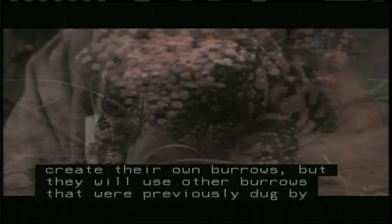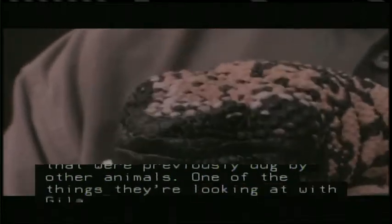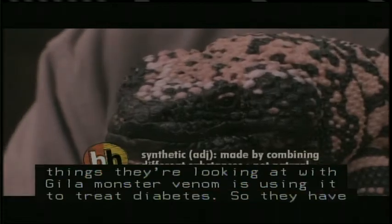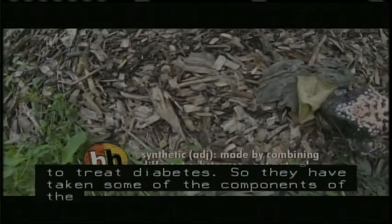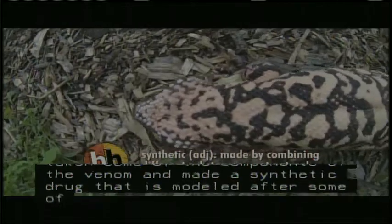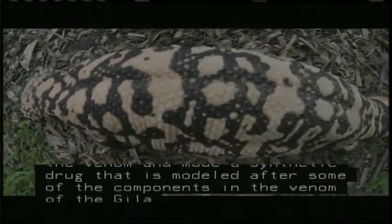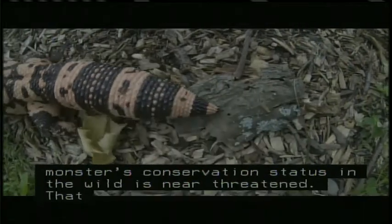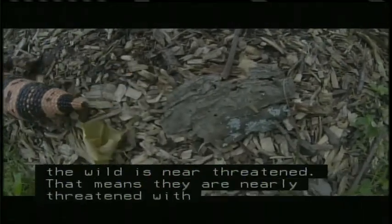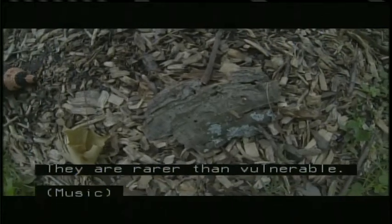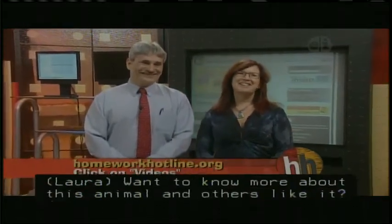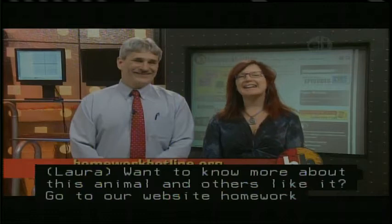Gila monsters usually grow to be about a kilogram or two pounds and 22 inches long. They will burrow to stay out of the heat during the daytime, so they'll burrow to stay cool. They do often create their own burrows but they'll also use burrows that were previously dug by other animals. One of the things they're looking at with Gila monster venom is using it to treat diabetes. They've taken some components of the venom and made a synthetic drug modeled after components of the venom. The Gila monster's conservation status in the wild is near-threatened. That means they're nearly threatened with extinction, rarer than vulnerable. Do you want to know more about the Gila monster? Go to our website, HomeworkHotline.org, and click on videos.